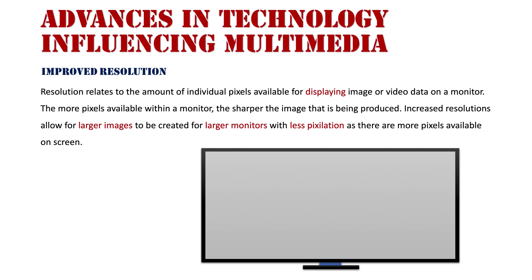The more resolution we have, the sharper the image will be. Increased resolutions allow for larger images to be created for larger monitors with less pixelation, as there are more pixels available on screen. That's why in the last 10 years, TVs have been able to get larger and larger, because we are able to offer these higher resolutions that retain the quality of the picture being displayed, even though the screen is larger.